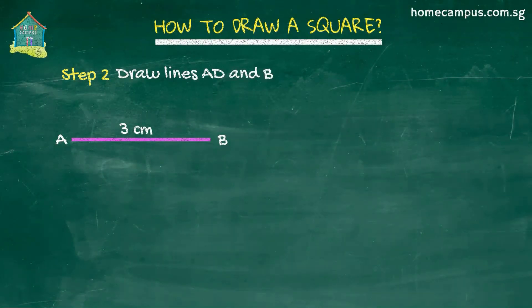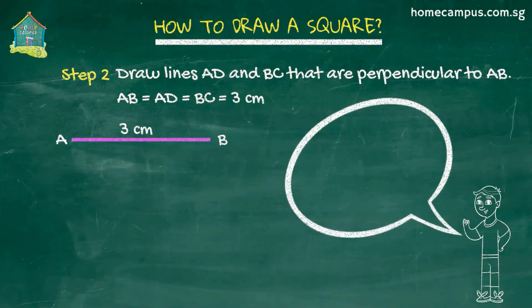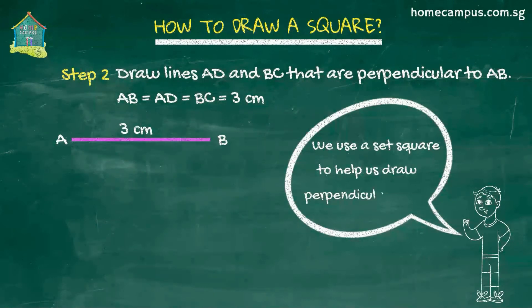Next we draw lines AD and BC that are perpendicular to AB. We do that using a set square. A set square looks like this and is shaped like a right angle triangle.